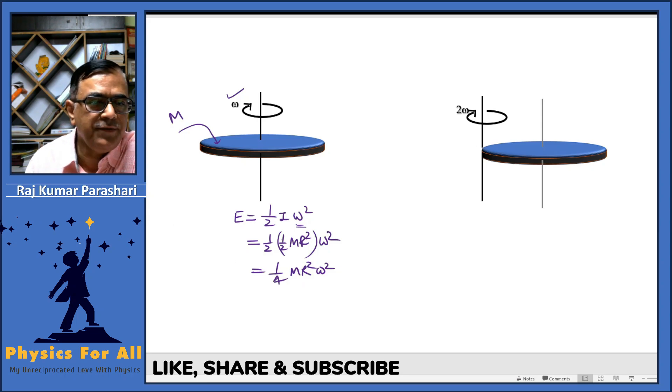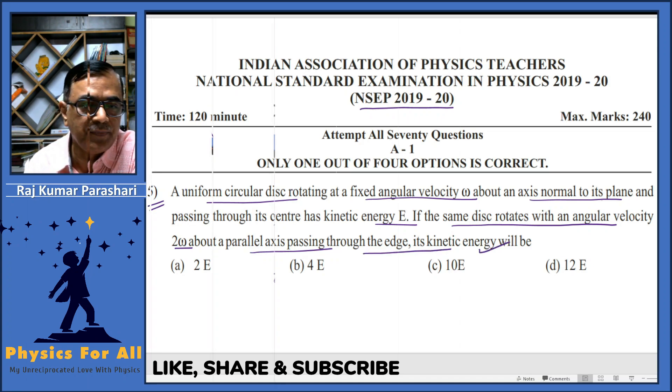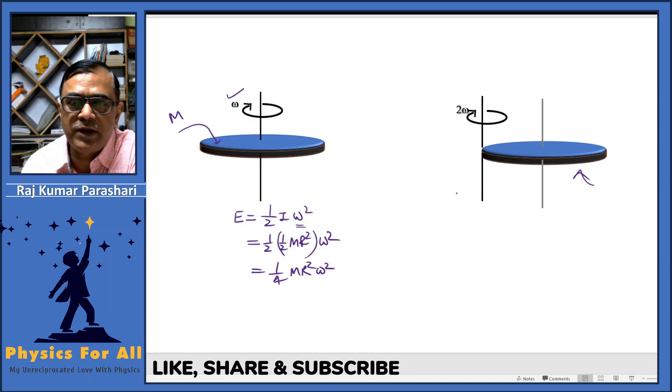Now let's read further. The same disc now rotates with angular speed 2*omega about an axis which is parallel to the previous axis and passing through one of its edges.